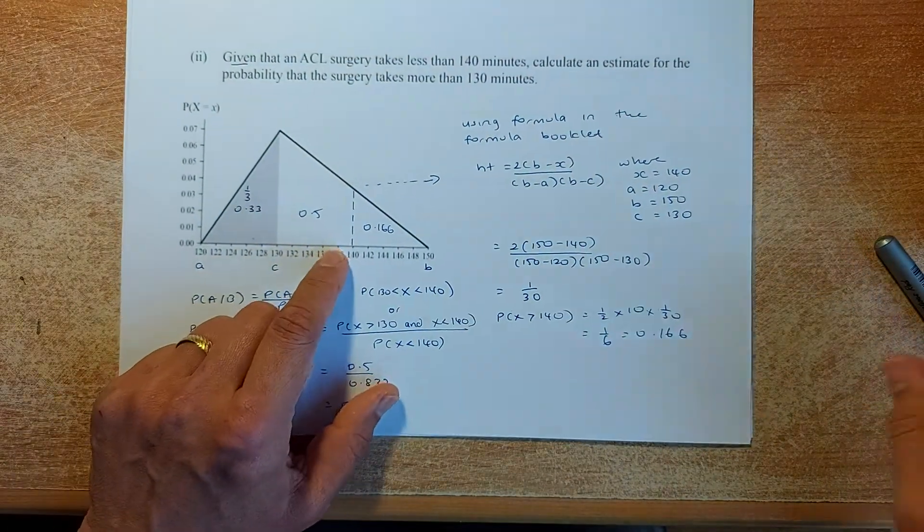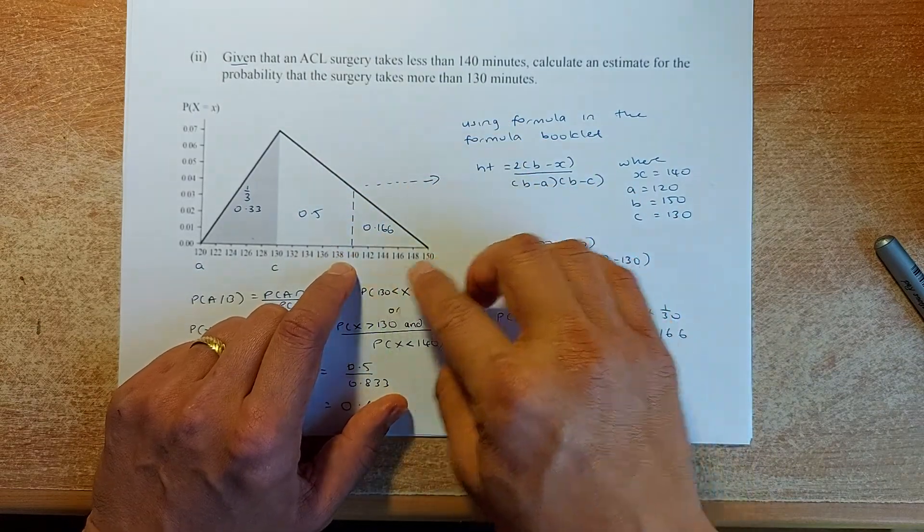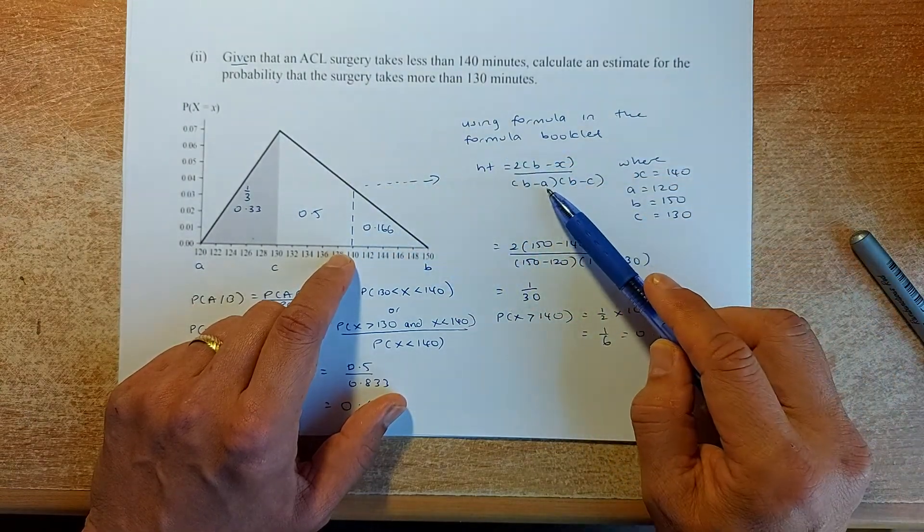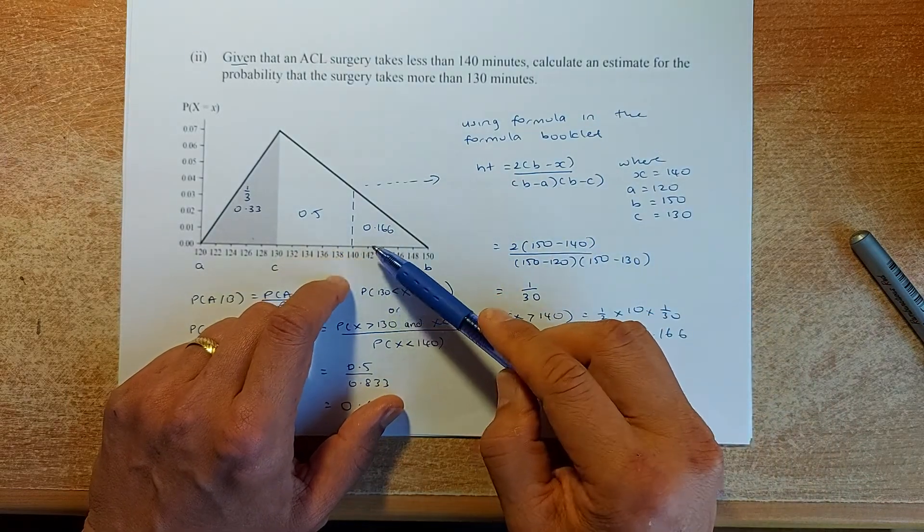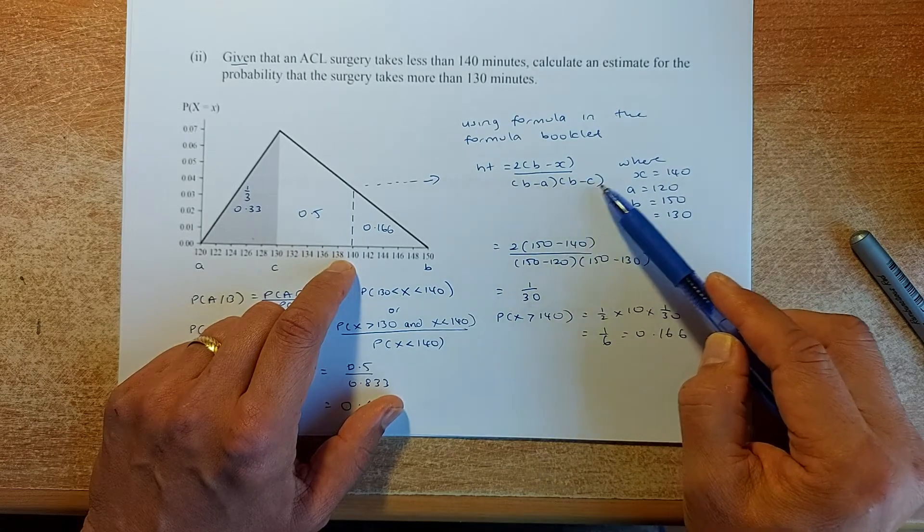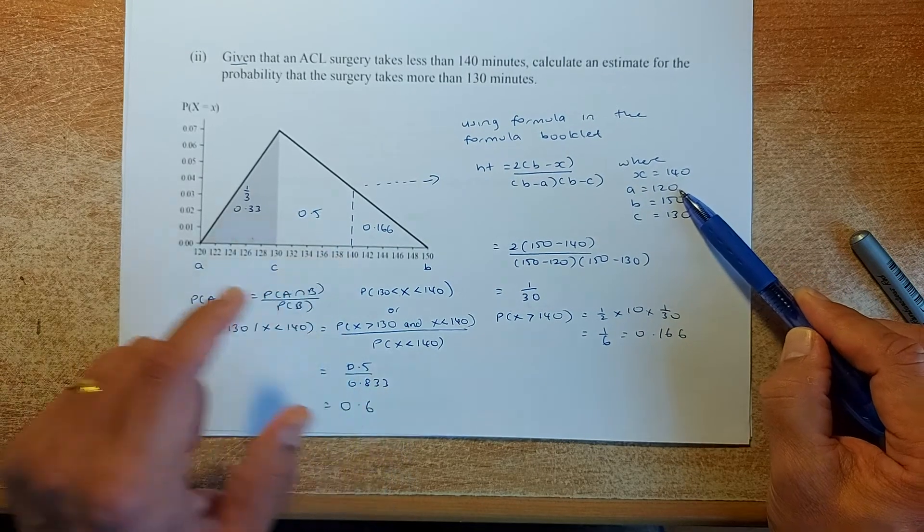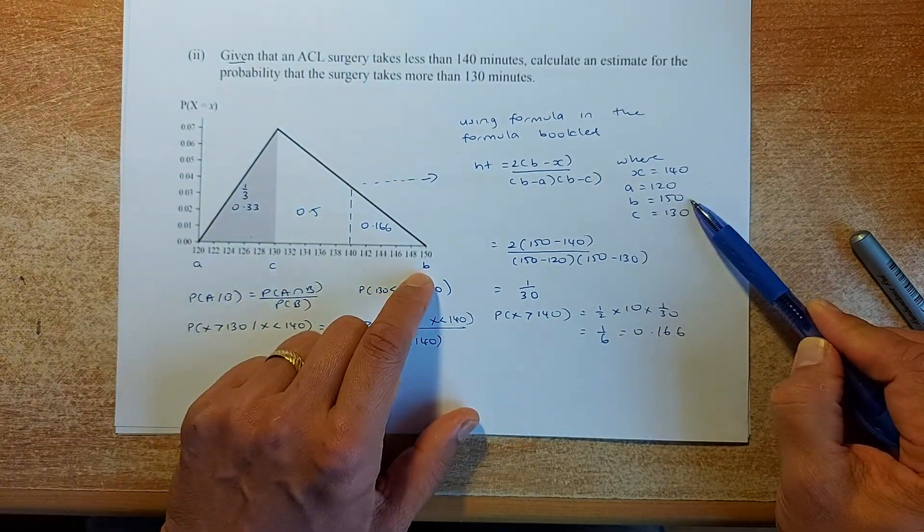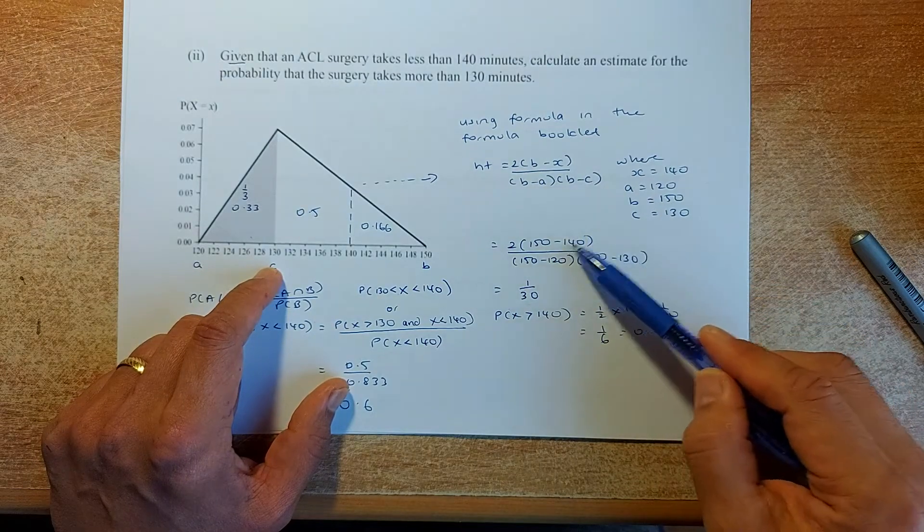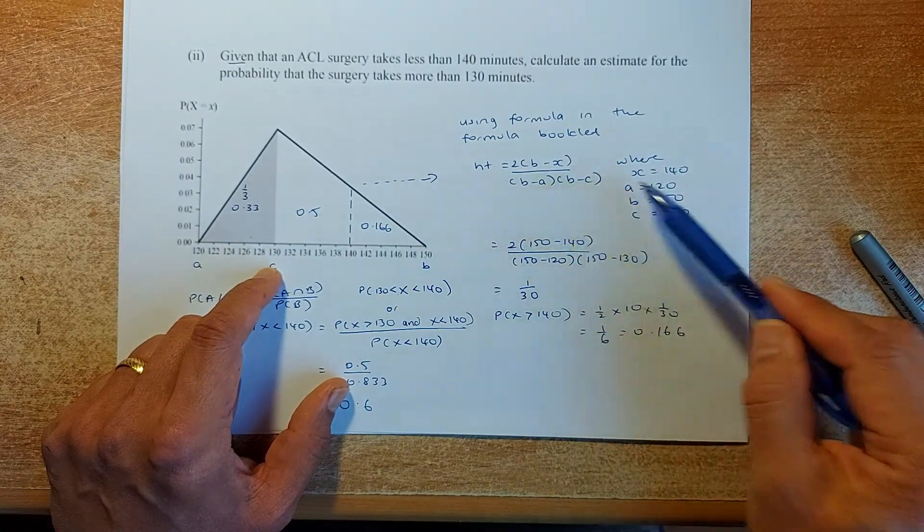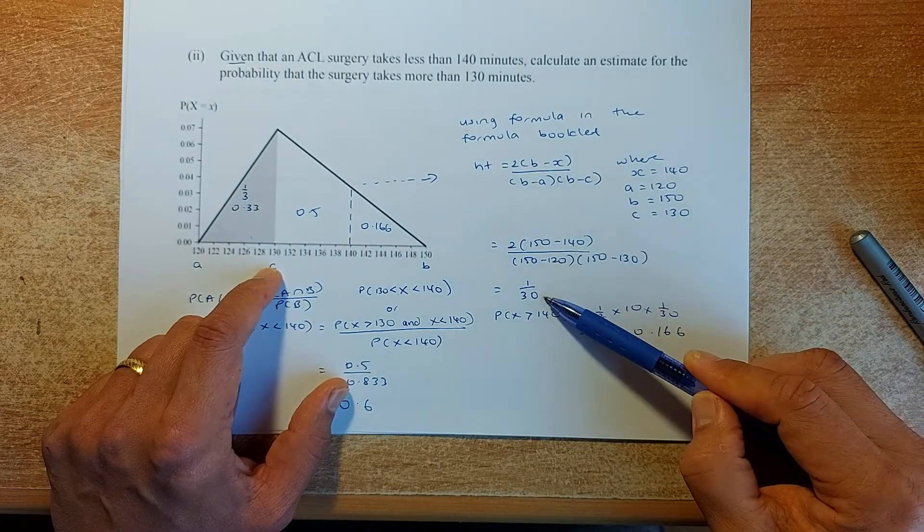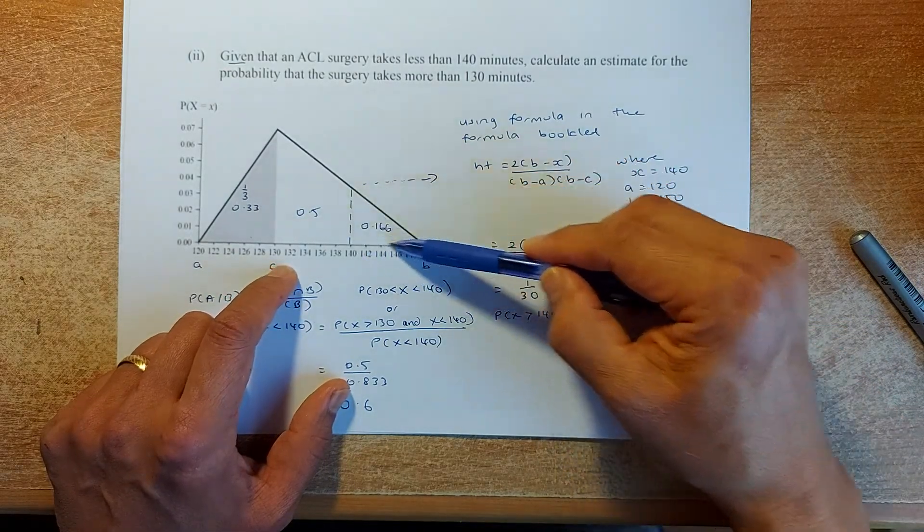We need to calculate the height of the area between 140 to 150. Using the formula booklet, the formula to calculate between 140 to 150 is 2(b - x) / [(b - a)(b - c)]. Your x is 140, a is 120, b is 150, and c is 130. Substitute in the values: 2(150 - 140) / [(150 - 120)(150 - 130)]. Put in your calculator, you should get 1 over 30. Once you know the height, you can calculate the area of this region.